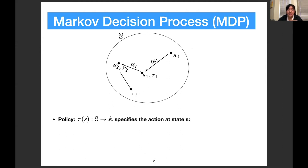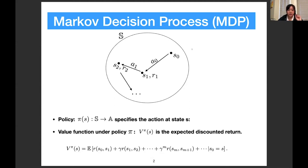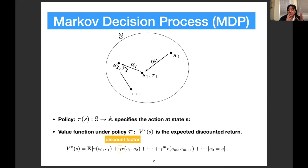The policy Pi(S) basically specifies the action at state S. An important function called the value function in reinforcement learning is basically the expectation of the total reward if you start from state S. Here we have a discount factor gamma, a constant between zero and one. If gamma is close to one, then we value the future rewards more; if it's close to zero, we value it less.